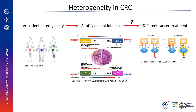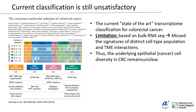As you may already know, CRC is a heterogeneous disease. As a result, a lot of effort has been done to develop a good classification method to stratify patients into bins so we can treat patients in each group separately. The Consensus Molecular Subtype, or CMS, is currently the state-of-the-art transcriptome classification for colorectal cancer. It classifies CRC into four different groups: CMS1, CMS2, CMS3, and CMS4.